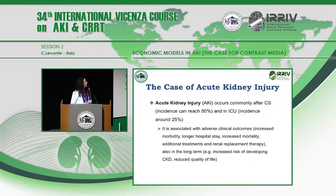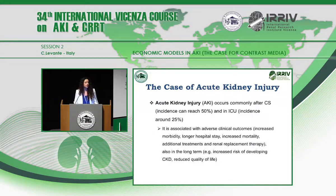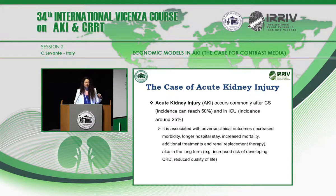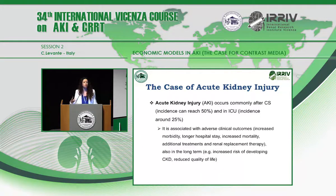Now I will move to the case of acute kidney injury. AKI occurs commonly after cardiac surgery and in the ICU, with an incidence of around 50% and 25% respectively. AKI is associated with adverse clinical outcomes such as increased morbidity, increased mortality, additional therapies required — renal replacement therapy first of all — and longer hospital stay. Adverse clinical outcomes also occur in the medium to long term, with a higher risk of progressing to CKD and reduced quality of life.